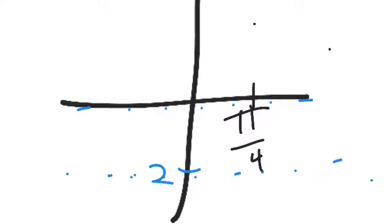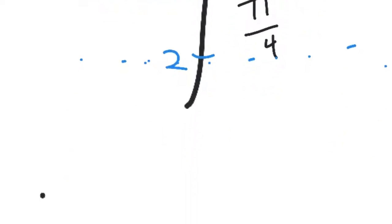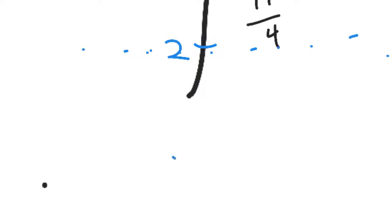So if our midline's been shifted down 2 spaces and our amplitude is 3, that means we go up 1, 2, 3 as our highest. That puts us at positive 1. And then we're going to go down 2, 3 from the midline for our lowest point. So negative 5 is as low as this graph can go.